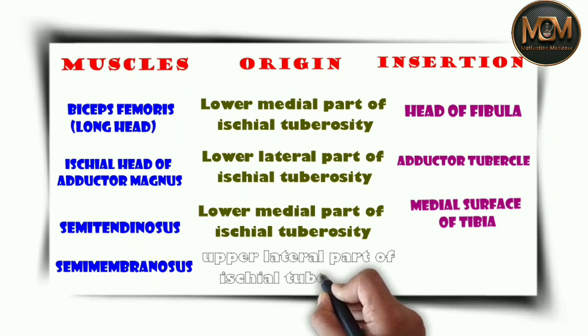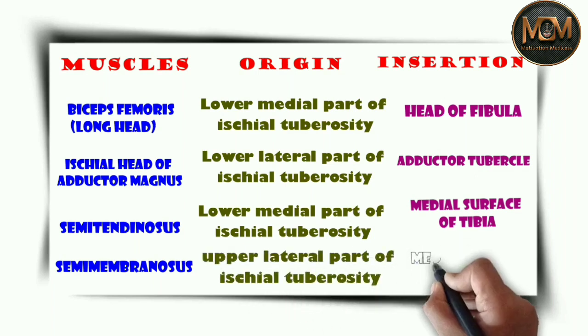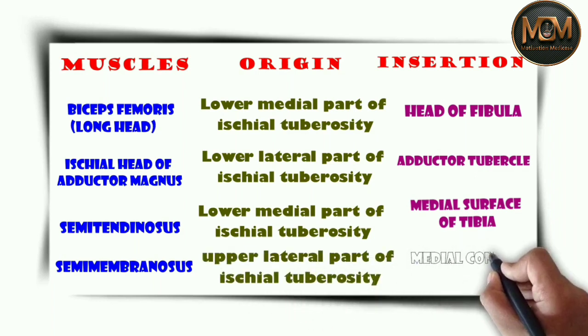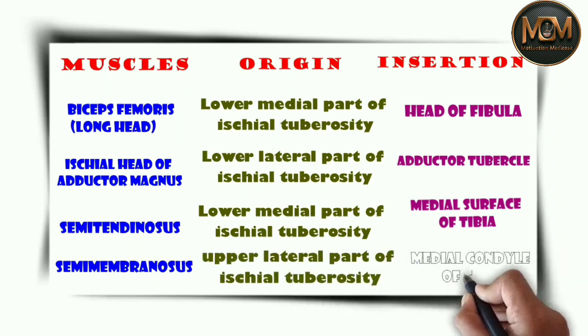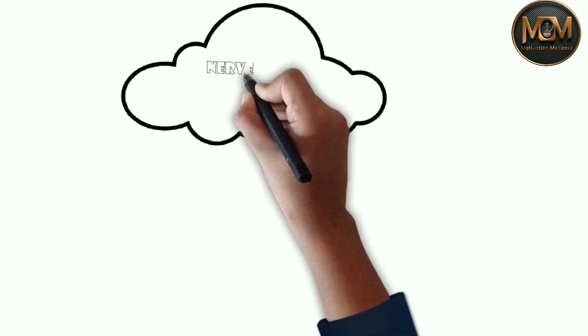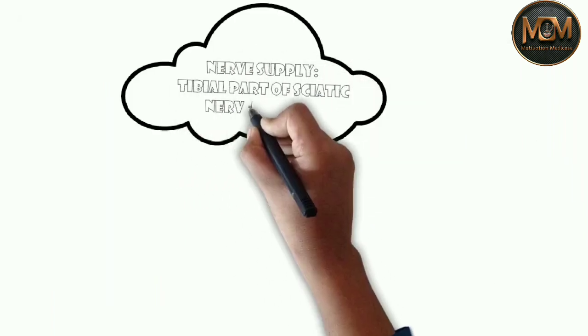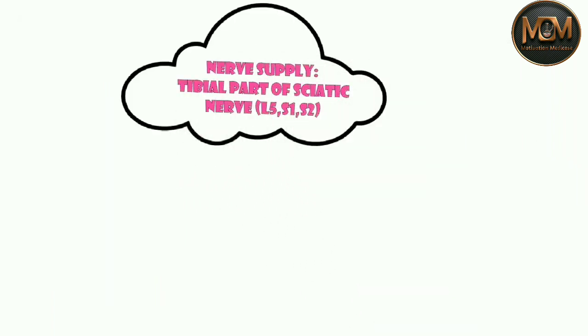The nerve supply of these muscles is from the tibial part of the sciatic nerve. The root values of this nerve are L5, S1, and S2.